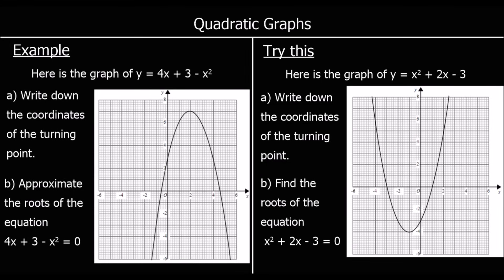Here we're looking at quadratic graphs. A quadratic is something where the highest power is x squared. Quadratic graphs make parabola shapes — a U shape for a positive x squared term, and when the x squared term is negative, it flips over and makes more of an n shape.